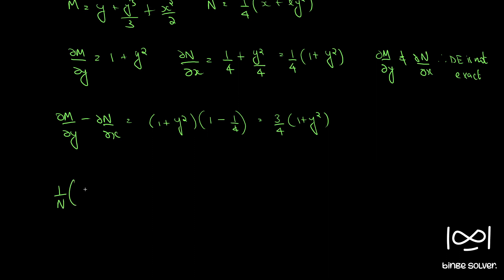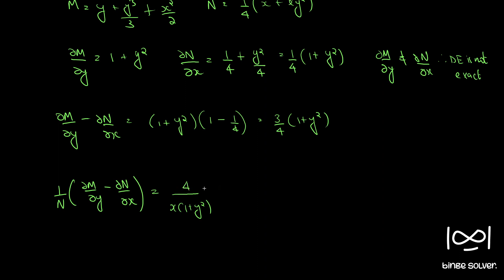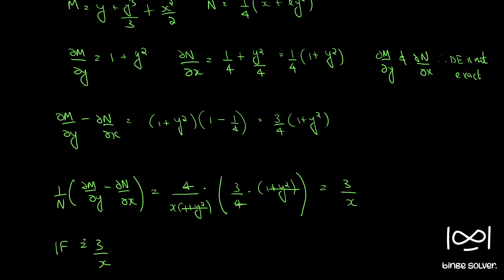Computing (1/N)(∂M/∂y − ∂N/∂x): N = (1/4)·x·(1 + y²), and the difference is (3/4)(1 + y²). So we get [4 / x·(1+y²)] × (3/4)(1 + y²). The (1 + y²) and 4 cancel, leaving 3/x. So f(x) = 3/x.